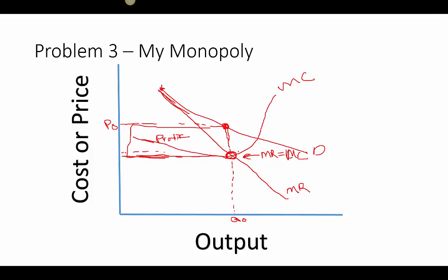Now consider a quantity just a little more than Q0 — call it Q1. Is anyone willing to pay the price at Q1? Yes, definitely — it's actually a lower price, so consumers would pay it. The monopolist isn't necessarily willing to supply it, but if they did, society would benefit. That leads us to the concept of consumer and supplier surplus.